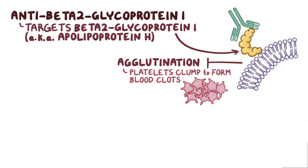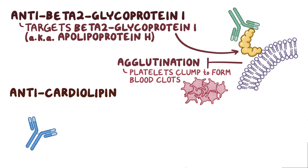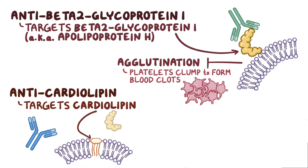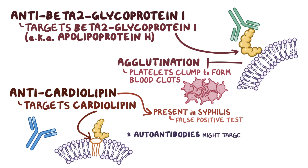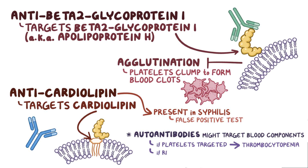Another antiphospholipid antibody is anticardiolipin, which targets a lipid protein in the inner mitochondrial membrane called cardiolipin, which binds beta-2-glycoprotein-1. Anticardiolipin antibodies are also present in syphilis, and that causes a false positive test for syphilis. Autoantibodies might also target blood components — if platelets are targeted it can lead to thrombocytopenia, and if red blood cells are targeted it can lead to anemia.